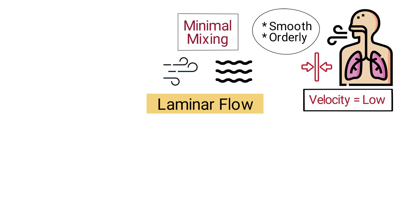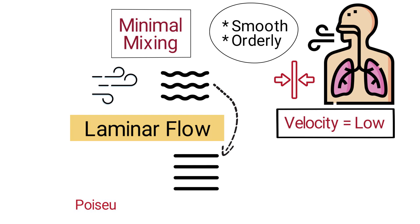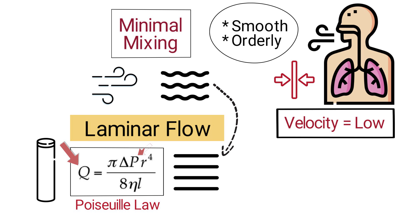In laminar flow, the air molecules travel in straight lines parallel to the walls of the airway. The flow rate is governed by the Poiseuille Law, which states that the flow rate through a tube is directly proportional to the pressure difference across it and inversely proportional to the length and viscosity of the fluid.